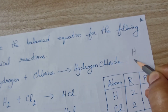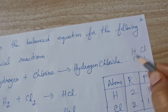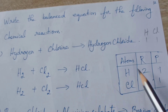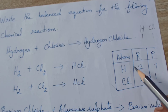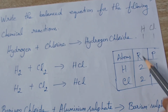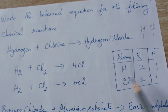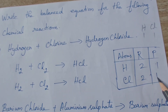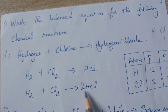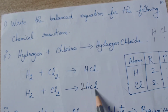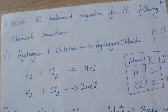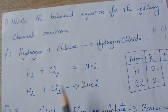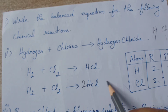Convert word to skeletal equation first. Hydrogen exists as H₂, chlorine as Cl₂. Hydrogen chloride: H valency 1, Cl valency 1, so the formula is HCl. The skeletal equation is H₂ + Cl₂ → HCl. Now balance: reactant side has 2 H and 2 Cl; product side has only 1 H and 1 Cl. Put 2 in front of HCl. Balanced: H₂ + Cl₂ → 2HCl.